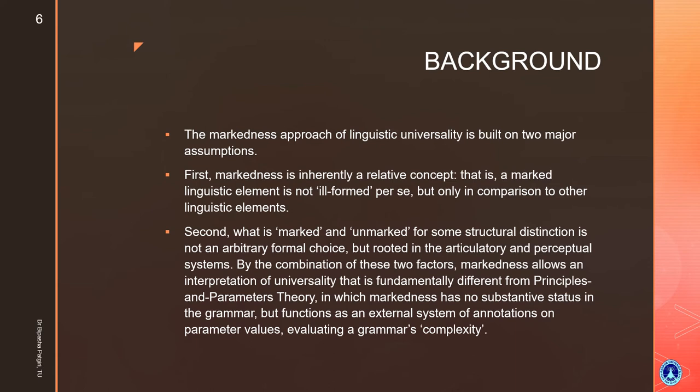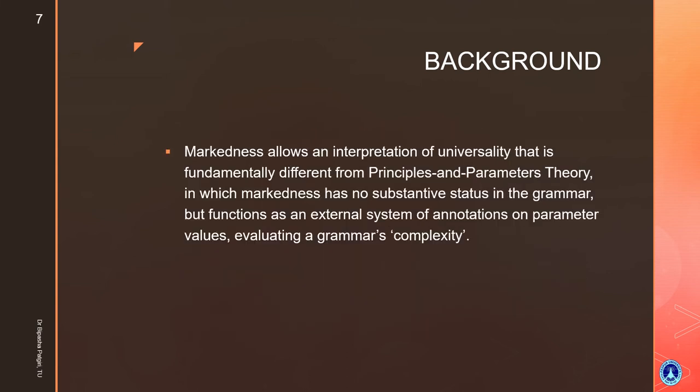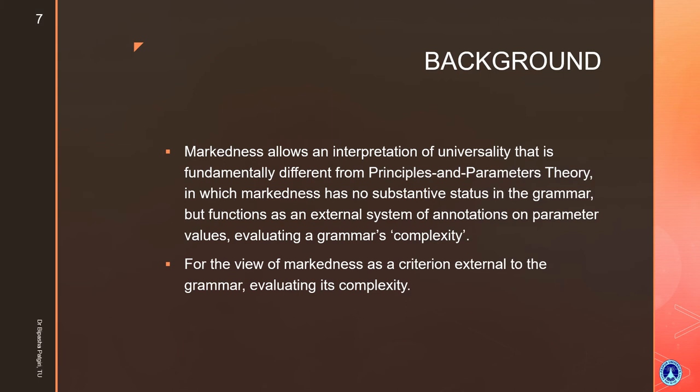Markedness does not mean a structure is not allowed; it is allowed, but its use is restricted or not very favored in cross-linguistic terms. Second, what is marked and unmarked for a structural distinction is not an arbitrary formal choice, but rooted in the articulatory and perceptual systems. By combining these two factors, markedness allows an interpretation of universality fundamentally different from Principles and Parameters theory, where markedness has no substantive status in the grammar but functions as an external system of annotations evaluating grammar's complexity.